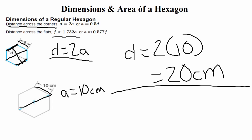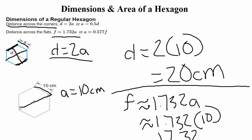Now, even though this particular question isn't asking us, let's go ahead and calculate the distance across the flats. For finding the distance across the flats, that formula is F is approximately equal to 1.732A. So for that one here, all we would have to do is plug in A there, which would be 10. So 1.732 times 10 is going to give us 17.32 centimeters. So now we know the distance across the corners, we know the distance across the flats, just depending on what you're being asked for for a particular problem.